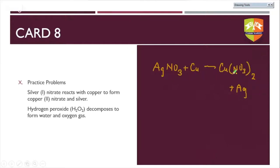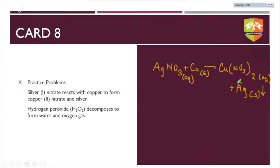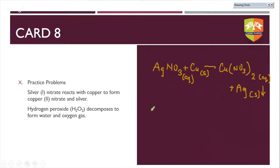Silver has to get deposited and written as a solid, shown with a downward deposition arrow. This is one important aspect to remember while writing a chemical equation. Now for hydrogen peroxide H₂O₂ decomposing into H₂O plus O₂: H₂O₂ is an aqueous solution, water is written as liquid, and oxygen gas is evolved — shown with an upward arrow and written as gaseous. Note the equation is not yet balanced.